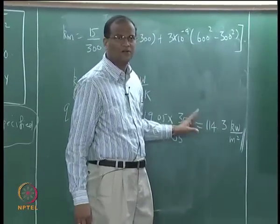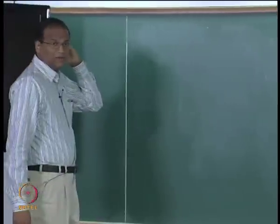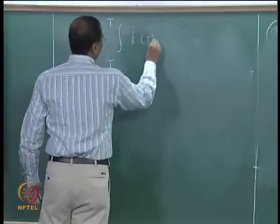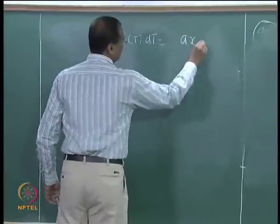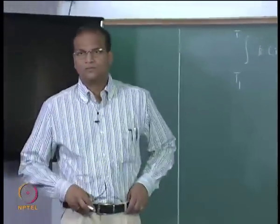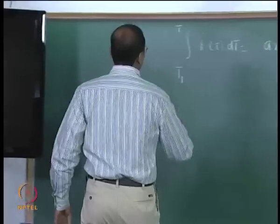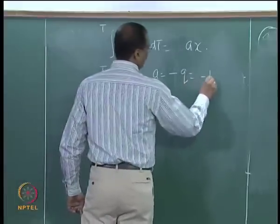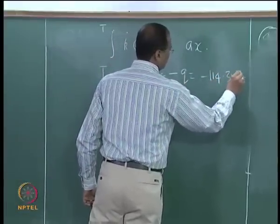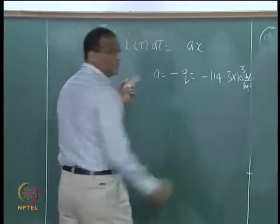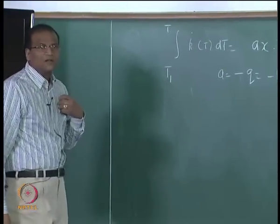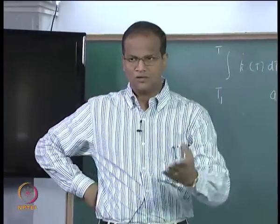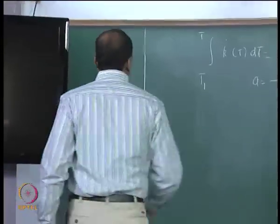The heat flux is a constant. One dimensional plane wall, no heat generation steady state. Whatever is coming from the left side has to go on to the right side. Where else can it go? Therefore, the heat flux is constant throughout.